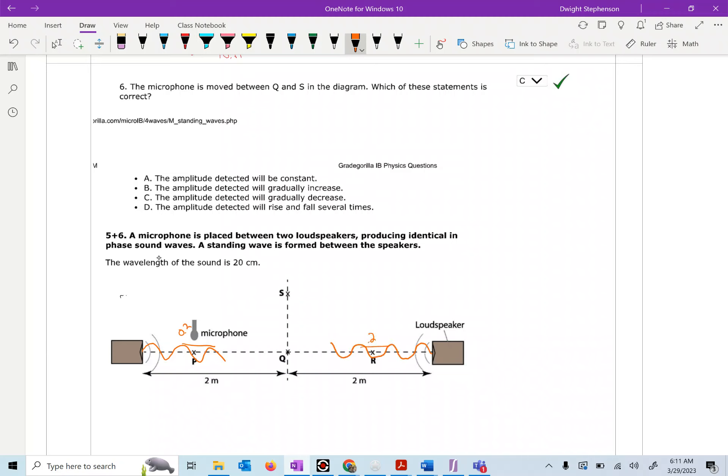Wavelength is 20 centimeters, which means essentially that this is two meters, so you get ten full wavelengths in on this side, and you get ten full wavelengths in on this side.